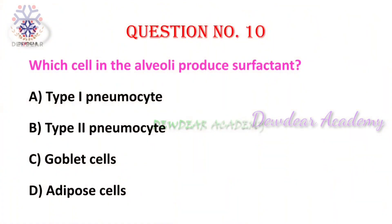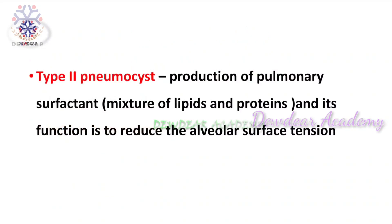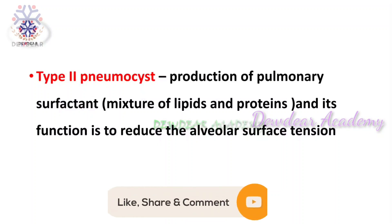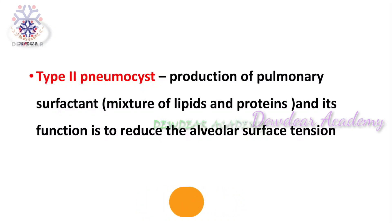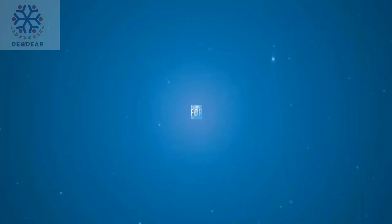Question 10: which cell in the alveoli produces surfactant? Options: type 1 pneumocyte, type 2 pneumocyte, goblet cells, adipose cells. The right answer is type 2 pneumocyte. The main function of type 2 pneumocytes is production of pulmonary surfactant, which reduces alveolar surface tension, prevents collapse of alveoli during expiration, and facilitates expansion during inspiration. Thank you for watching the video.